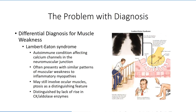Similar to myasthenia gravis, Lambert-Eaton syndrome is an autoimmune disorder targeted to the neuromuscular junction, but in this situation it is calcium channels that are targeted. The presentation pattern is similar to that for the inflammatory myopathies, although facial muscle involvement may still be observed. One of the distinguishing factors is that creatine kinase levels are not typically elevated in this patient population. Further diagnostic tests specific to Lambert-Eaton syndrome should confirm this diagnosis.